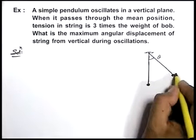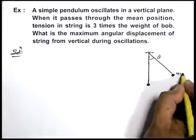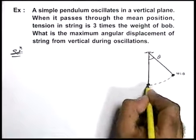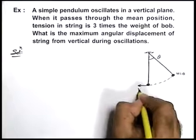When from this position, bob was released from initial speed zero, when it reaches the bottom it'll have some speed say v.